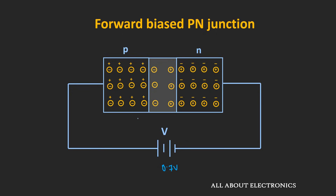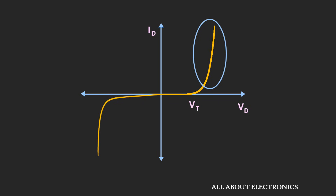Once electrons cross the depletion region, they get attracted towards the positive terminal of the battery. Coming into the p-side, they pass through the holes in the p-type region to reach the positive terminal. Similarly, holes get pushed towards the depletion region, and once they enter the n-side they get attracted towards the negative terminal of the battery. In this way, we get a flow of current due to the movement of both holes and electrons. As we increase the externally applied biasing voltage, more and more electrons and holes are able to cross the depletion region, contributing to an increasing flow of current.